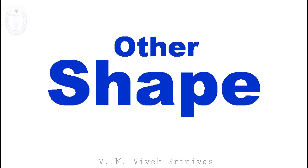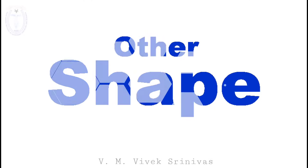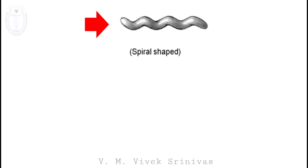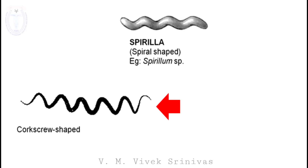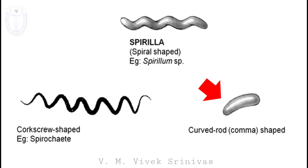Other shapes of bacteria include spiral shaped, which are called spirilla — the example being Spirillum species — then corkscrew shaped, the example being spirochetes, and curved rod shaped, that is comma shaped, the example being Vibrio species. These are the other shapes of the bacteria.